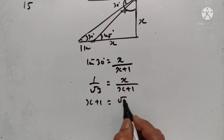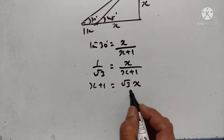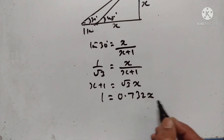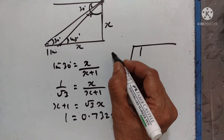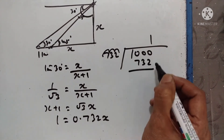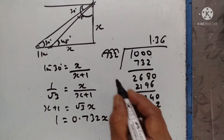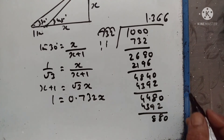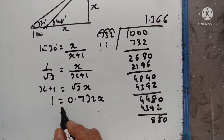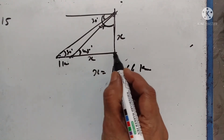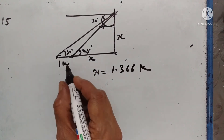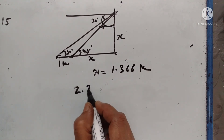So x plus 1 is equal to square root of 3 times x. Therefore 1 equals 1.732x minus x equals 0.732x, so x equals 1 divided by 0.732, which gives approximately 1.366. So x equals 1.366 km. The distance of the nearer stone from the foot of the hill is 1.366 kilometers, and the distance of the other stone from the foot of the hill is 1.366 plus 1, which is 2.366 kilometers.